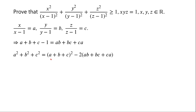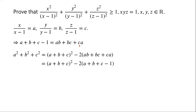From here, we know that ab + bc + ca = a + b + c - 1. So a² + b² + c² = (a + b + c)² - 2(a + b + c) + 2, which can be written as (a + b + c)² - 2(a + b + c) + 1 + 1.